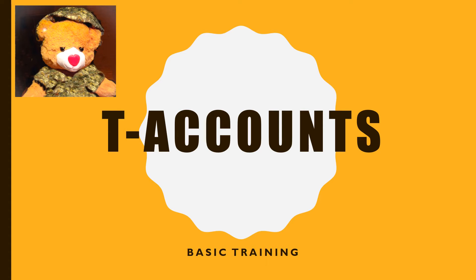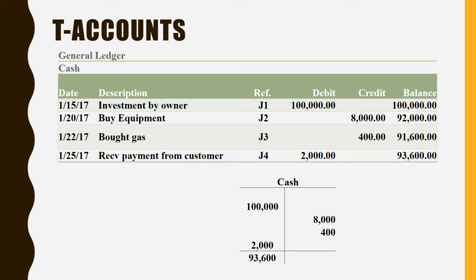That takes us to T-accounts. This is just a quick and dirty way to summarize a lot of accounting information into one place. It's not part of the accounting cycle because it's not part of our permanent working papers, but it is something you'll use a lot throughout the semester to solve many different problems. If you remember from a couple lessons ago, we talked about a general ledger — that's a bunch of columns that end up being reams of paper showing your balance in each account and where that comes from. We need a quick way to summarize all that information into one place, and that's what we do with the T-account, shown at the bottom.